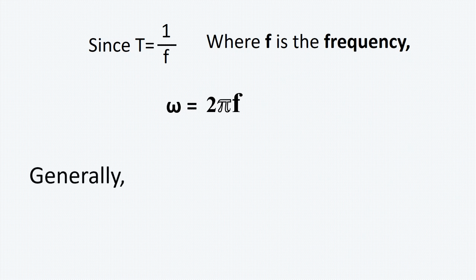So in general, combining all the formulas, we have omega equals delta theta over delta t, or s over rt, or 2π over capital T, or 2πf. All those formulas can be used in calculations.